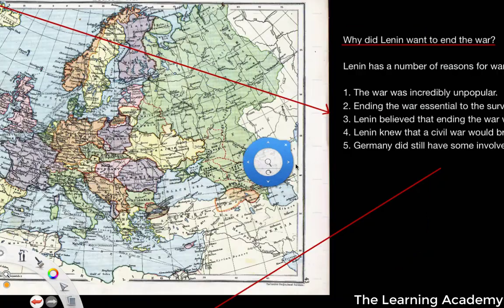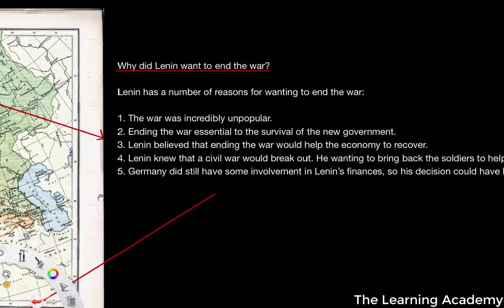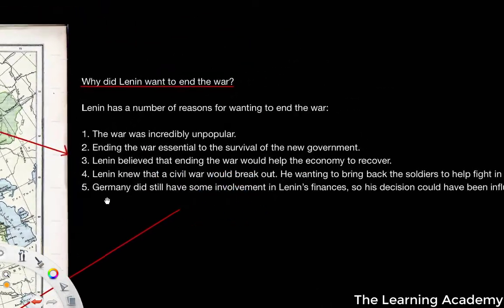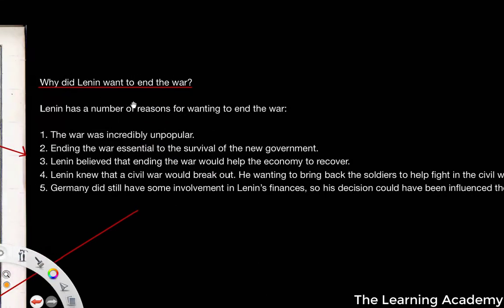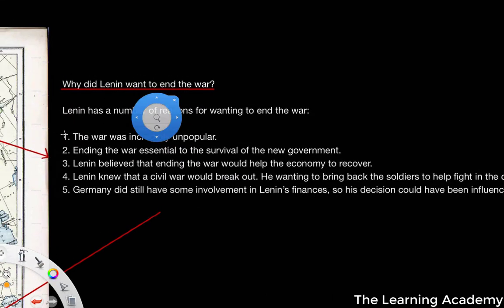So first of all, question one: why did Lenin end involvement in World War I? The first reason is that it was incredibly unpopular. It effectively led to the February Revolution, and it also effectively led to the October Revolution.